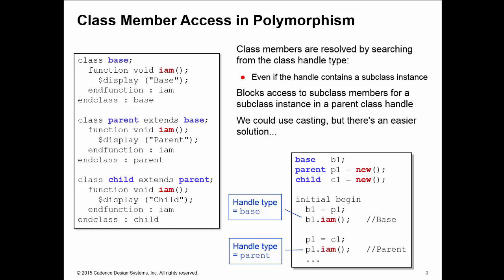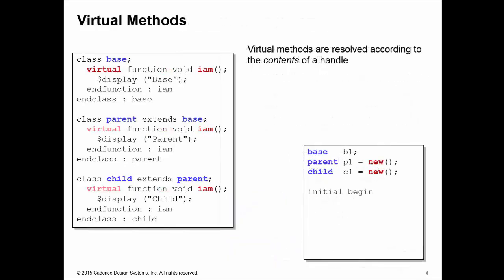The solution is to use virtual methods. We declare a method as being virtual simply by putting the virtual keyword in front of the method. Virtual methods are resolved according to the contents of a handle, not the type of a handle. So if I take my parent instance in P1 and copy it into B1, if I now call B1.im, will we still go to the base class first?